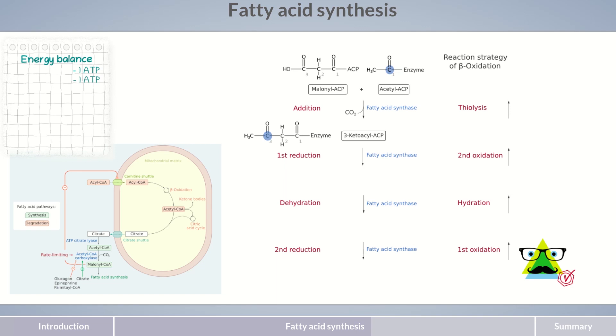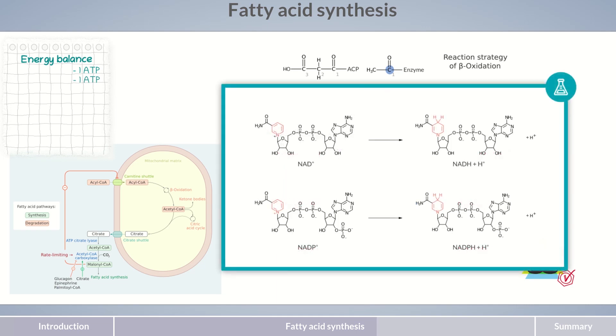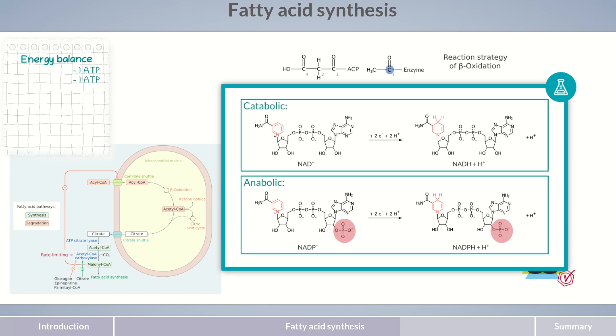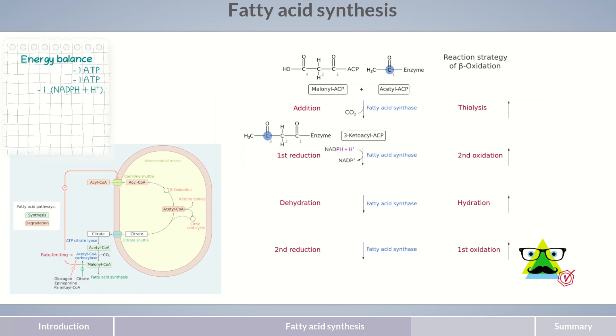The electrons and protons for the subsequent reduction stem from the reducing equivalent NADPH and H+. It functions in the same manner as NADH and H+, and can transfer two protons and two electrons. The only difference between the two reducing equivalents is a phosphate group in NADPH and H+, positioned in a part of the molecule not involved in the redox reaction. To help you tell the two reducing equivalents apart, you can use the following rule of thumb. NADH and H+ primarily plays a role in catabolic processes, in contrast to NADPH and H+ for anabolic processes.